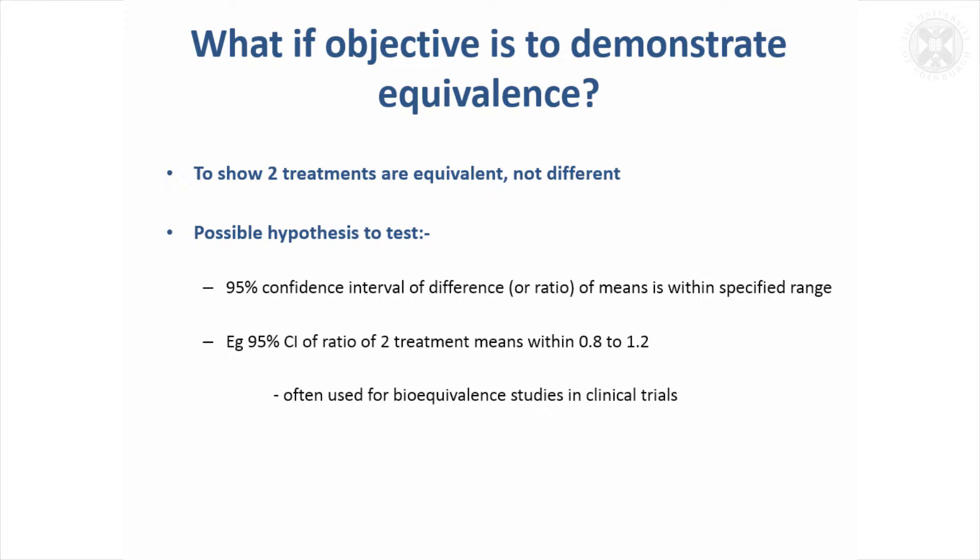The way that could be set up is you could say, I want my 95% confidence interval of the difference of the means or the ratio of the means to be in a specified range. Something that's done in clinical trials is two treatments, if their ratio lies within, or the 95% confidence interval of their ratio lies between 0.8 and 1.2, that's taken to mean the treatments are equivalent. So that's then called a bioequivalence study.